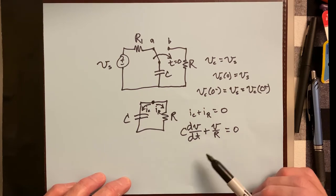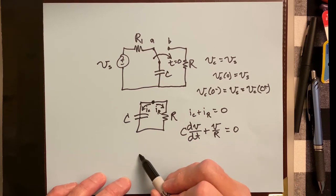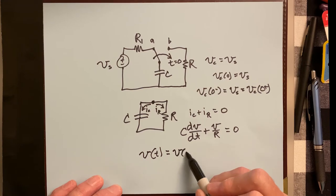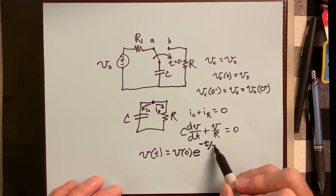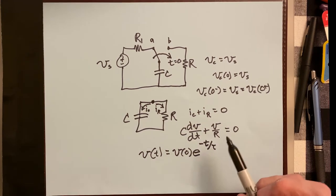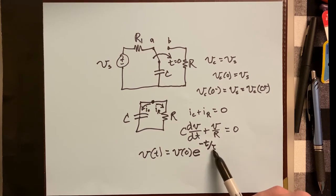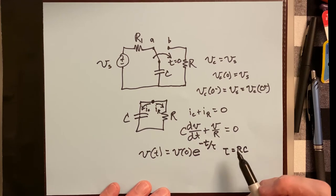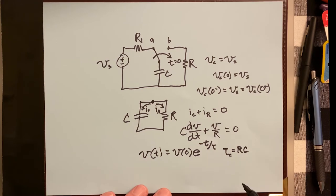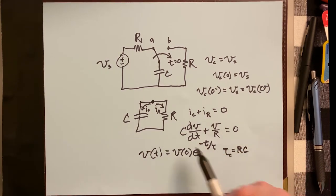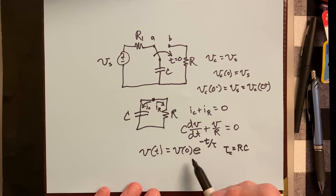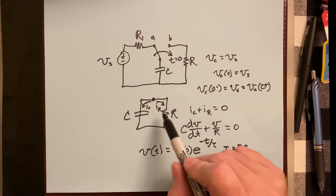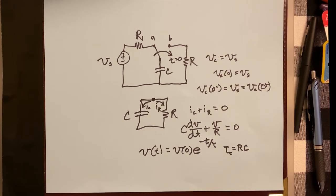The solution to this ODE is very similar to what we saw for the RL circuit. The voltage as a function of time is V(0)·e^(-t/τ). If you work through the separation of variables, you'll find that τ in this case equals R times C — the capacitive time constant, sometimes written with a subscript C. That is the natural response solution for a decaying RC circuit.